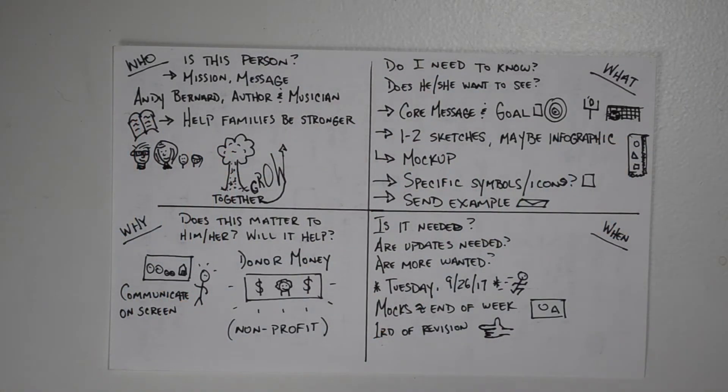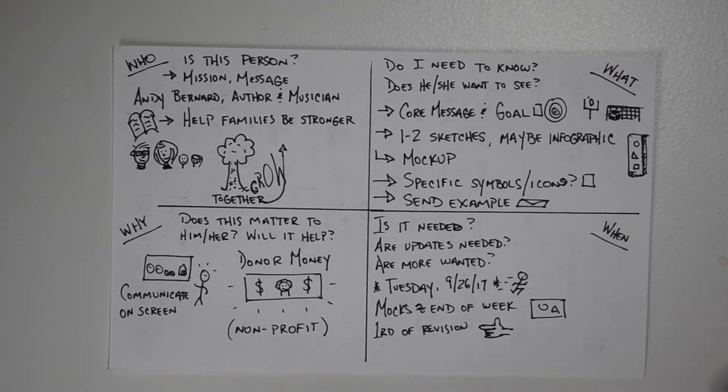I'm going to start out by showing you the four grid method that I use to get information from the client during our first call, and I'm also going to share with you what I screwed up on that led to the project not continuing, and the steps I'm taking to make sure that doesn't happen anymore. Let's go ahead and dive in. So here's the grid method that I use to make sure I'm getting the right information from the client and making sure we're all on the same page. This isn't necessarily the part that I screwed up on.